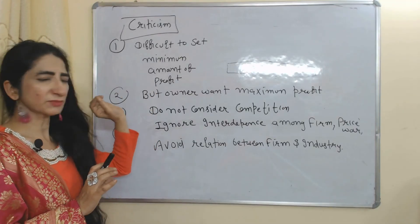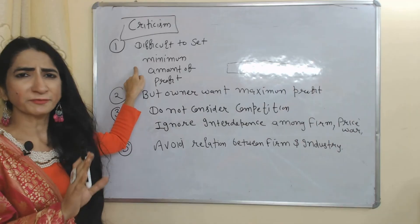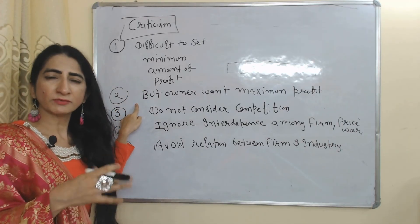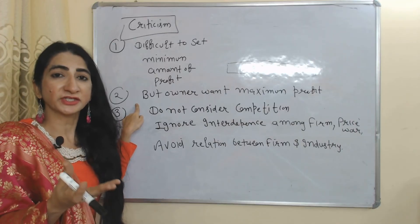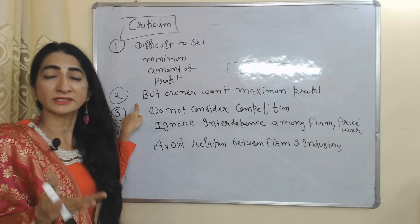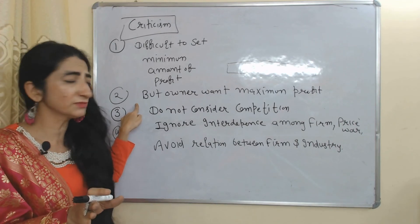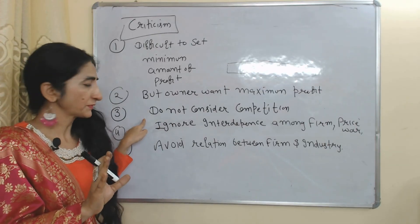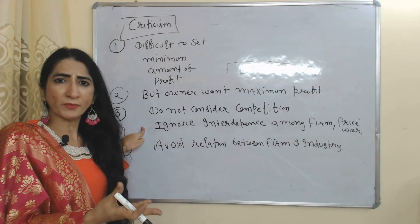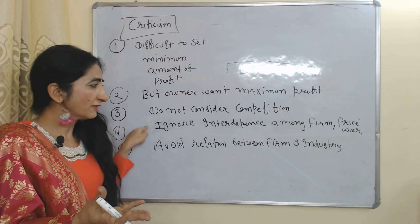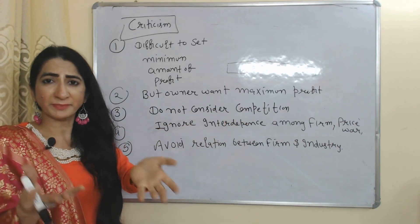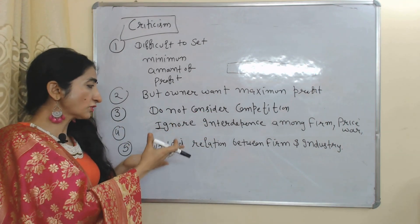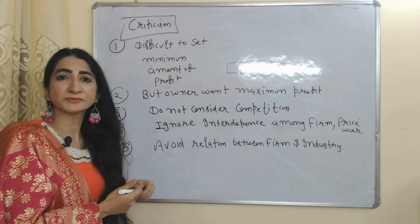Now we will see the criticisms of this model. First, it is very difficult to set the minimum amount of profit. According to this model we should get minimum profit, but shareholders or owners want maximum profit, not minimum profit. This model also does not consider any kind of competition. The model is based on oligopoly, and oligopoly markets have interdependence among firms and price wars, but this model completely ignores this. This model also avoids the relation between firms and industry.